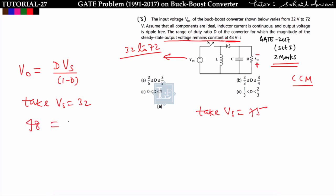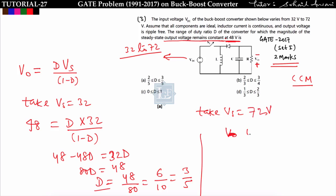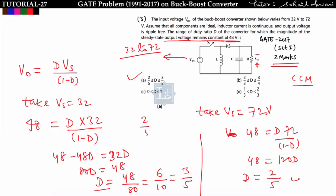With V_0 = d·V_s / (1 - d) and V_0 = 48 V: for V_s = 32 V: 48 = 32d / (1 - d), giving 48 - 48d = 32d, so 80d = 48, d = 3/5. For V_s = 72 V: 48 = 72d / (1 - d), giving 48 - 48d = 72d, so 120d = 48, d = 2/5. Therefore the duty ratio range is 2/5 ≤ d ≤ 3/5.